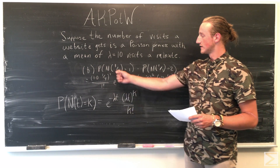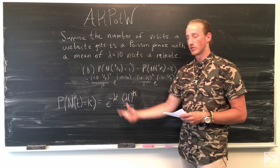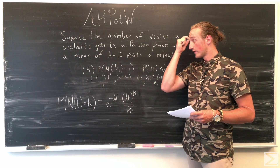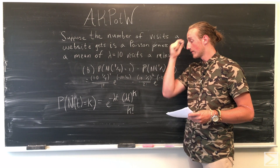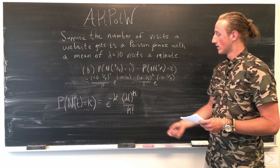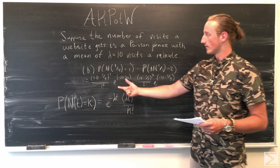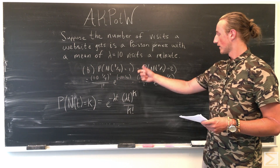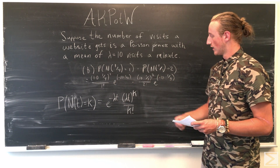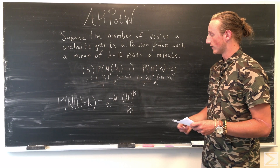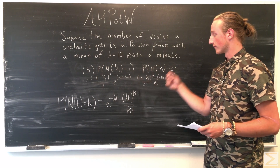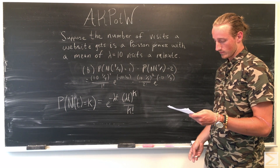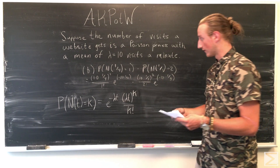Given our T and our K, we can plug into this formula. We're going to have the same mean lambda as in Part A, but our T and K values are different here for each of the two events. Solving and evaluating, we get about 4%.